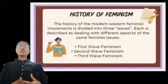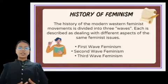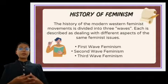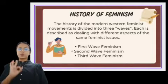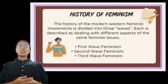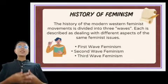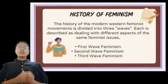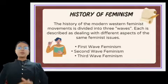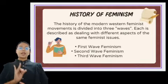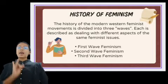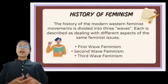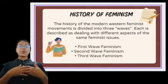The History of Feminism: The history of modern Western feminist movement is divided into three waves. It is described as dealing with different aspects of the same feminist issue. The three waves are: first wave, second wave, and third wave feminism. I will now discuss the first wave feminism.